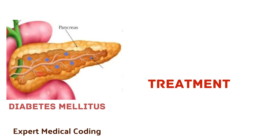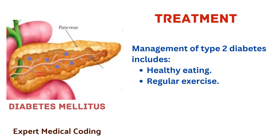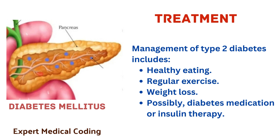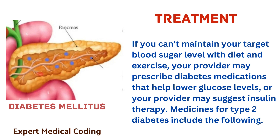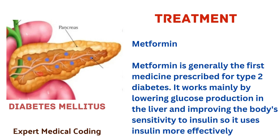Now let us discuss about the treatment. Management of type 2 diabetes includes healthy eating, regular exercise, weight loss, possibly diabetes medication or insulin therapy, and blood sugar monitoring. If you can't maintain your target blood sugar level with diet and exercise, your provider may prescribe diabetic medications that help lower glucose levels or suggest insulin therapy. The first medicine is Metformin, which is generally the first medicine prescribed for type 2 diabetes. It works mainly by lowering glucose production in the liver and improving the body's sensitivity to insulin so it uses insulin more effectively.